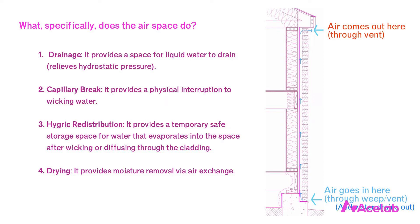It helps to understand specifically what that space is really doing for us. We need it to do four things. One: provide a space for liquid water to drain, i.e., relieve hydrostatic pressure. Two: provide a capillary break between the cladding and the water control layer, i.e., a physical interruption to wicking water. Three: provide what's called hygric redistribution — basically a temporary safe storage space for water that evaporates into that space after wicking or diffusing through the cladding. And four: provide moisture removal by air exchange, i.e., drying from ventilation. Of these four factors, the first three really only require a very modest amount of space to be effective — in fact, if the first three factors were the only ones at play, we'd only need a space of about 1/32 of an inch, or about 1 millimeter. That's it, even in wet climates.